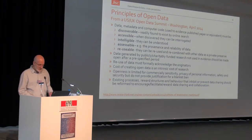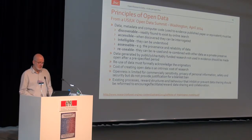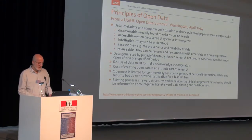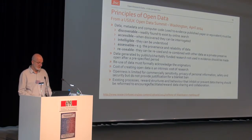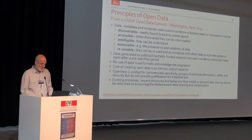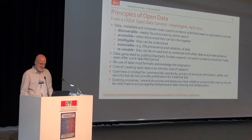More principles of open data from the US and UK Open Data Summit: data, metadata, and computer code used in evidence for a published paper or equivalent must be discoverable — so it can be easily found — must be accessible, intelligible — so it's easily understood — with provenance and reliability understood, and reusable. Because it's not just the researchers that use the data, it's allowing other researchers to reuse that data and discover new science.